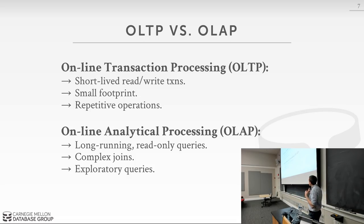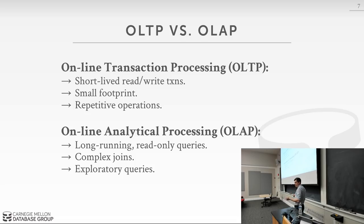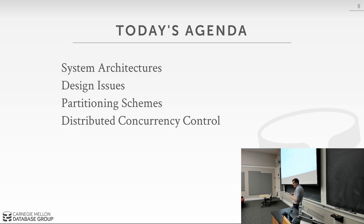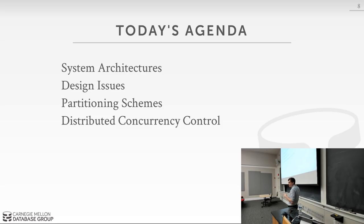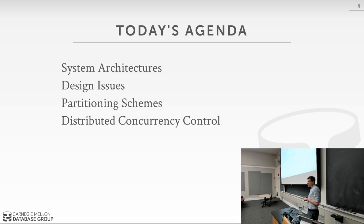Based on these workload differences, we start talking about how to build a system for one versus the other. Because OLTP requires read-write transactions, we need to spend more time on fault tolerance and concurrency control across multiple machines. For analytics, it's really about doing joins across multiple machines. Today we'll cover the different types of system architectures for a distributed database, then design issues including partitioning schemes, which are relevant to both OLTP and OLAP, and then distributed concurrency control.